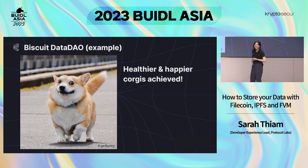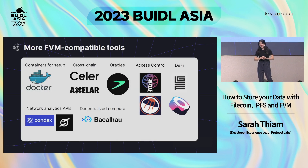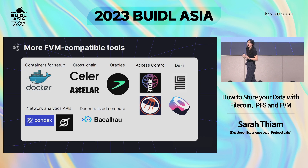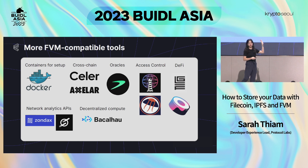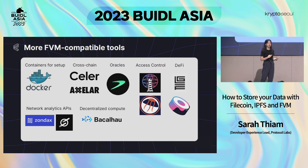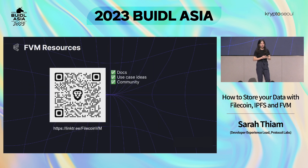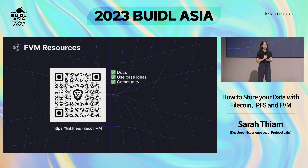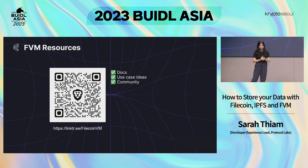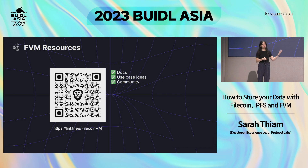The result is healthier and happier Corgis — that's an easy example for how you can think about a data DAO. We are also developing a richer developer ecosystem with more integrated tooling partners. Many partners are already integrated with FVM, with more coming on board every month. If you're interested in finding out more, there's a QR code link tree with all links to documentation, use case ideas, how other teams are building on FVM today, and how you can get involved with our community of highly technical builders.